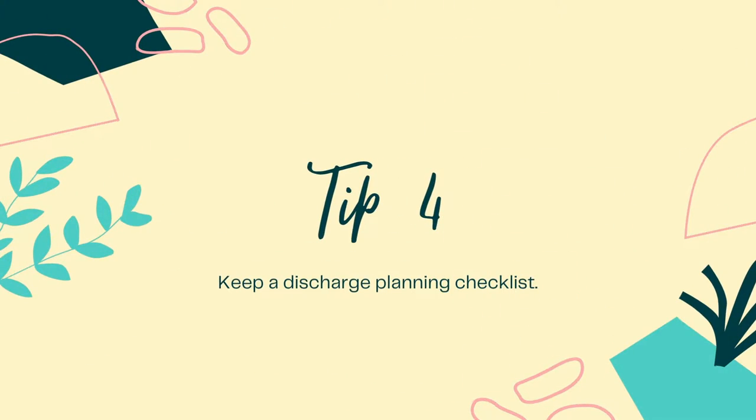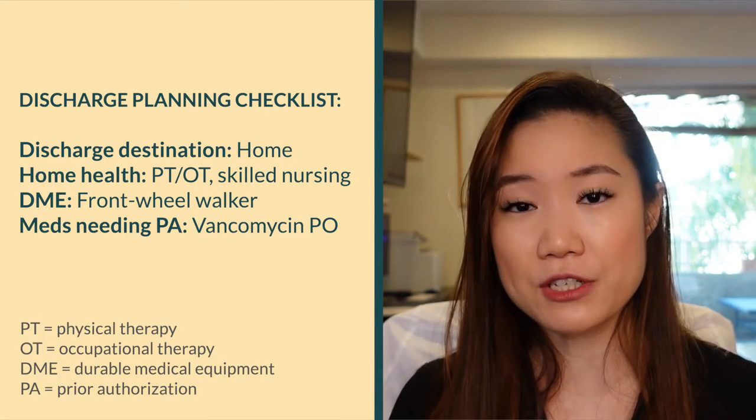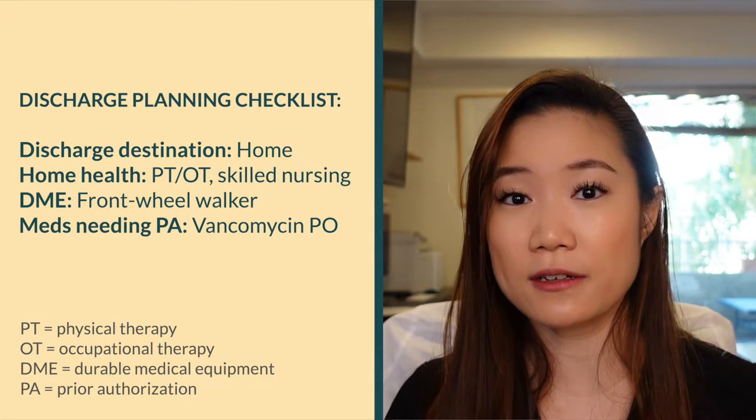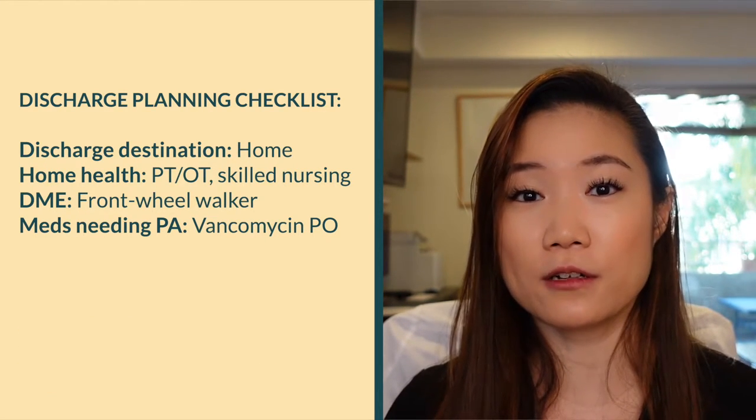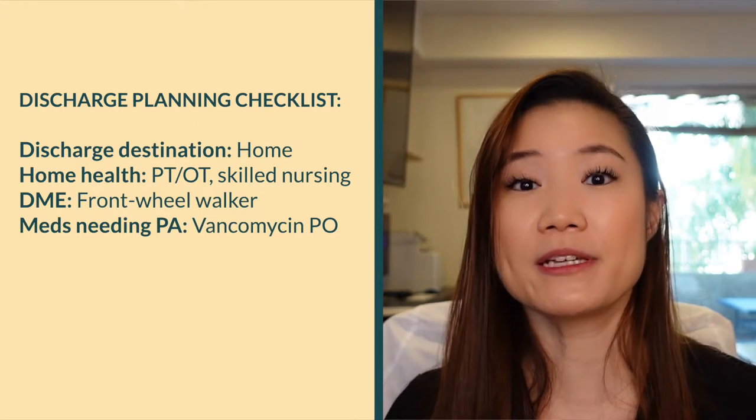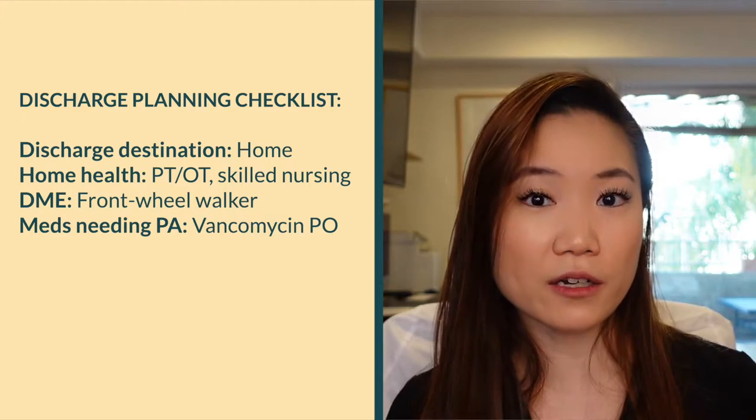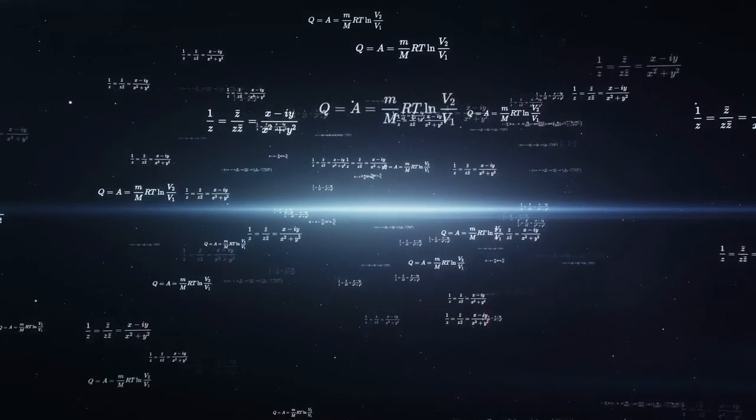Tip number four: have a discharge planning checklist. Discharge planning is a bit advanced for third-year medical students, but it's good to understand what's going on during rounds. It starts when a patient is admitted and includes where the patient will go after discharge, what medications need prior authorization, whether home health services are needed, and what durable medical equipment (DME) — like a walker or shower chair — the patient will need. I'll make a separate video on this, but having a checklist helps you track discharge planning day by day.